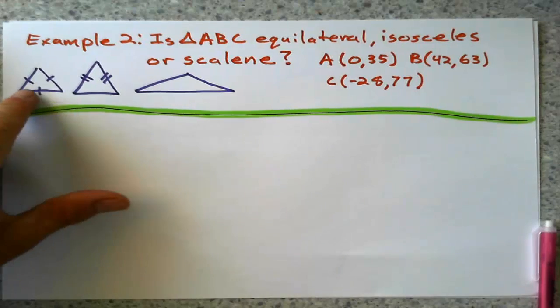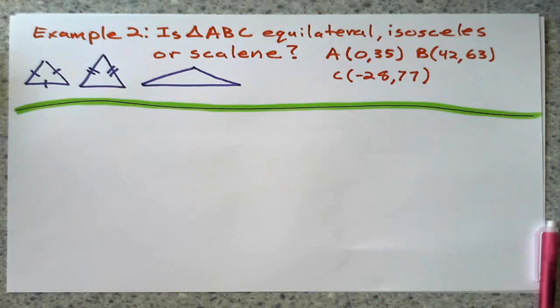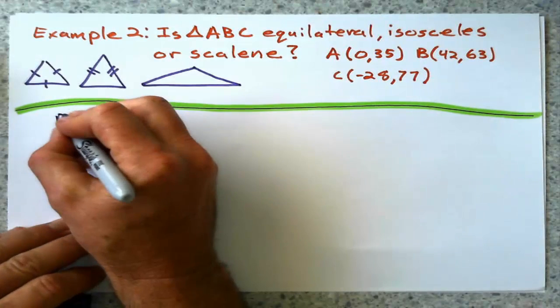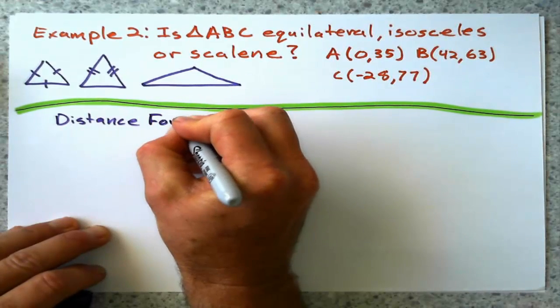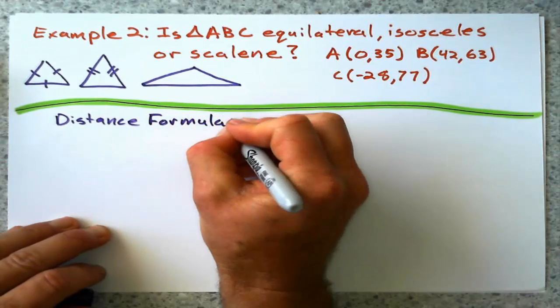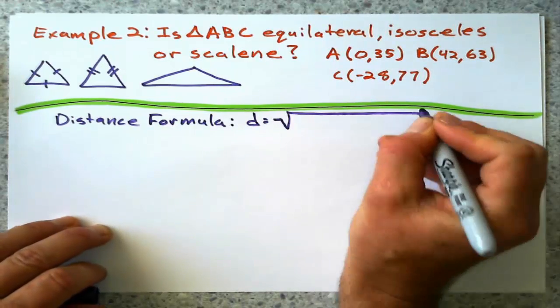They're my three triangles. Equilateral, isosceles, or scalene. And the only thing we have to find the length is our good old distance formula. And if we don't know it, that's what we're going to use here.